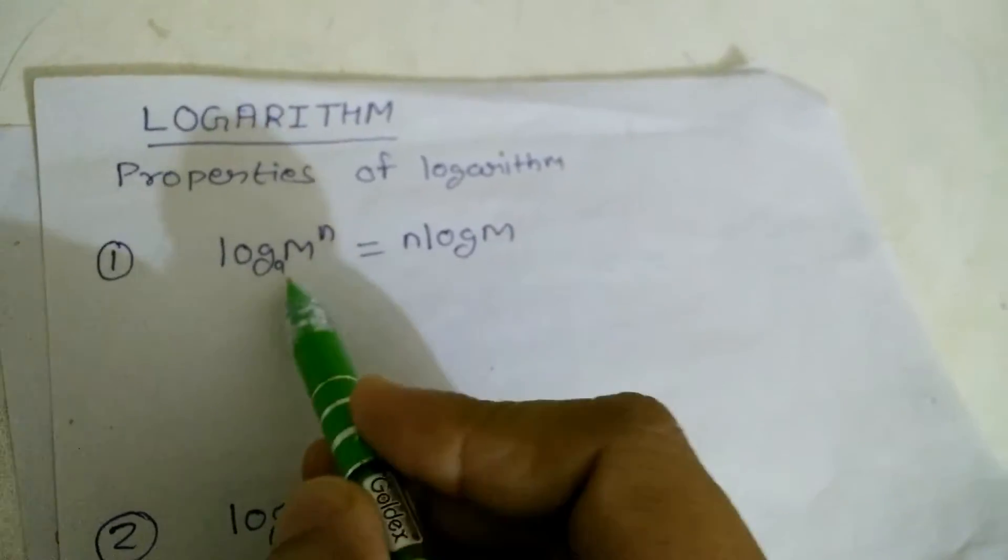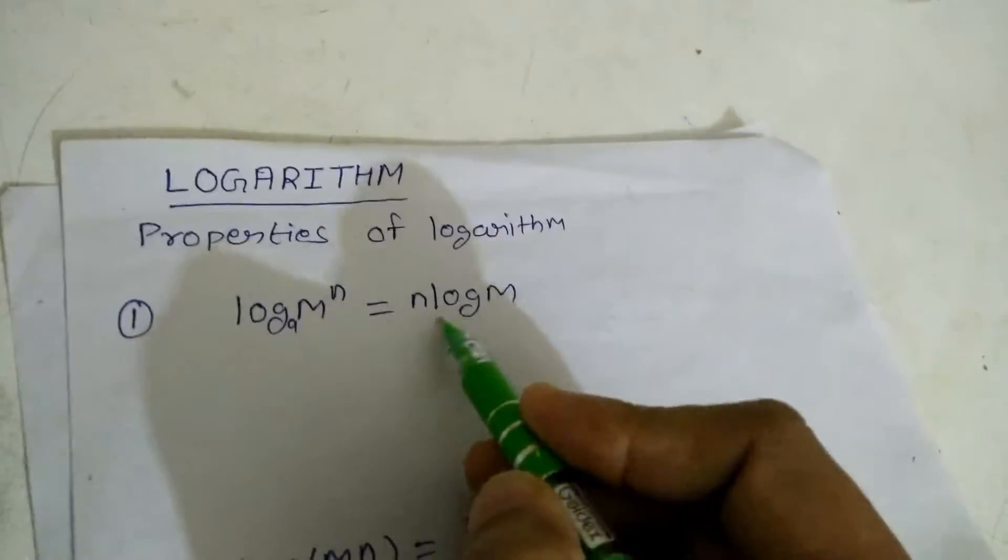First property of logarithm is log m raised to the power n, where a is base, is equal to n log of m.